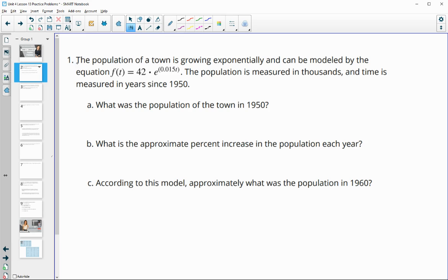Number one says the population of a town is growing exponentially and can be modeled by the equation f of t shown here. The population is measured in thousands and time is measured in years since 1950. So what was the population of the town in 1950? That's just going to be our initial amount here of 42, remembering that it's measured in thousands. So this is going to be a population of 42,000 in that initial year.